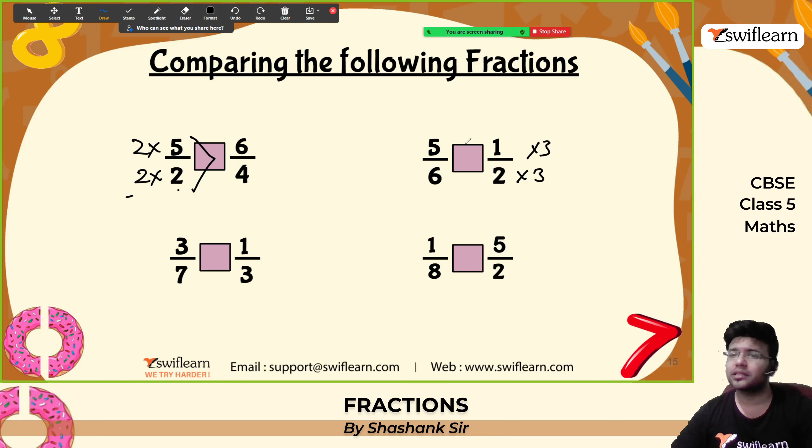Word problem: Ela reads 25 pages of a book containing 100 pages. Lalitha reads 2 fifths of the same book. Who read more? Ela read 25 out of 100 pages, which simplifies to 1 by 4. Lalitha read 2 by 5. Taking LCM of 4 and 5, which is 20: 1 by 4 becomes 5 by 20 and 2 by 5 becomes 8 by 20. Since 8 is greater, 2 by 5 is greater than 1 by 4. So Lalitha read more of the book.